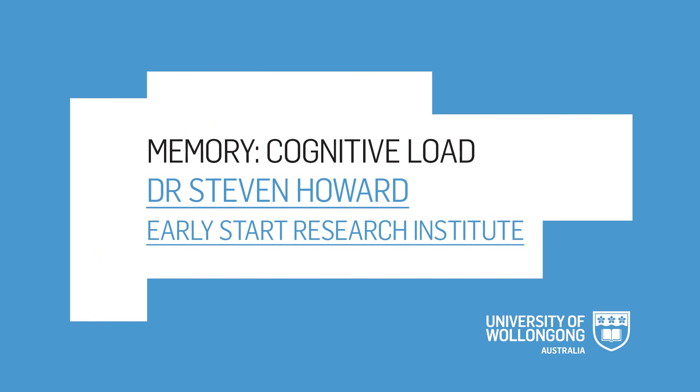Cognitive load theory is founded on the idea that we can only think about and process so much information at once. That thinking happens in our working memory, and what we know about working memory is we can only think about five to nine chunks of information at any one point in time.